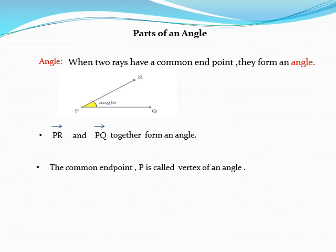The common endpoint P is called vertex of an angle. Ray PR and ray PQ are the arms of the angle.